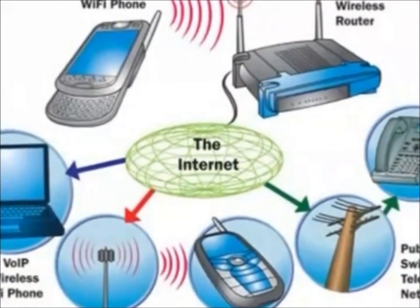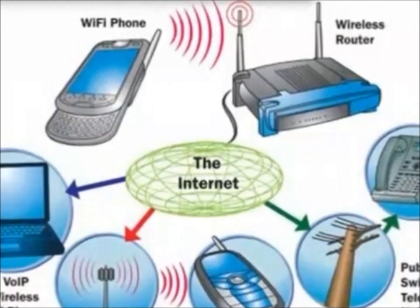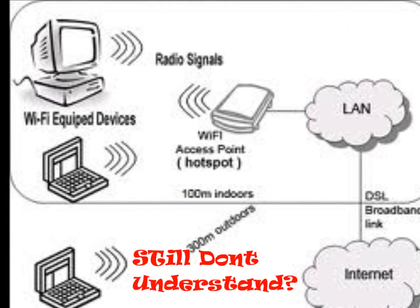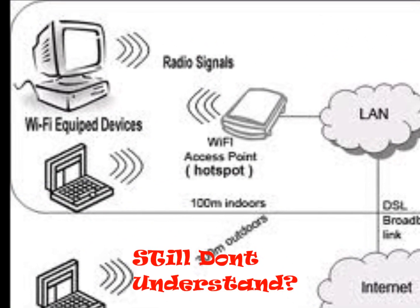Communication across a wireless network is achieved with two-way radio communication. A computer's wireless adapter converts data into a radio signal and transmits it using an antenna. Basically, this is what Wi-Fi is and how it works. You have a router, which is like the cradle for your telephone, and it has a connection using DSL or cable. It takes that signal and sends it wirelessly through radio signals to a receiver, which is generally a card built into the computer.